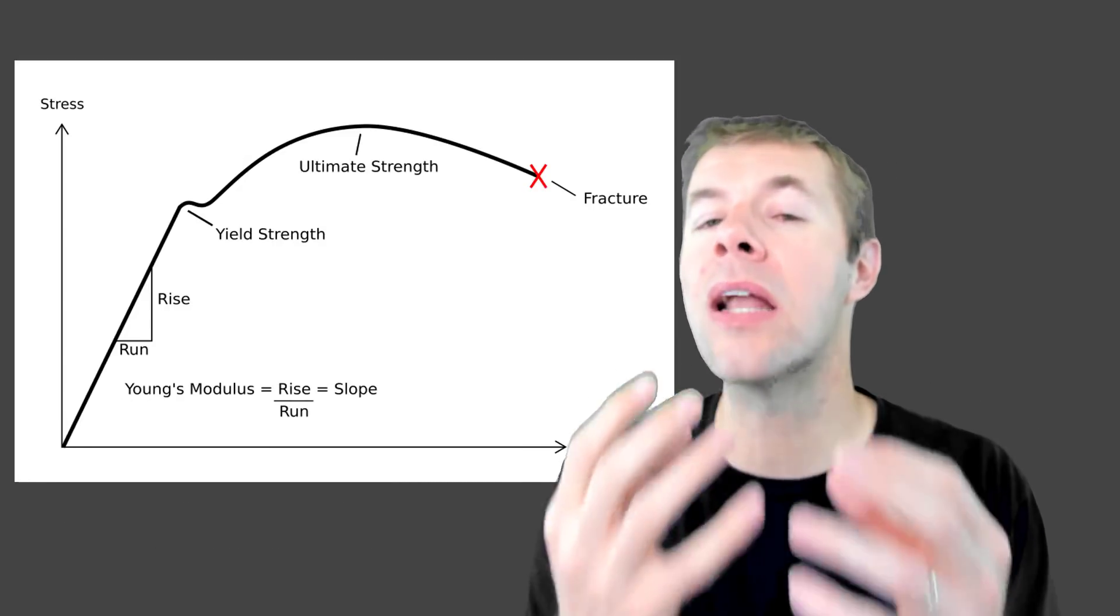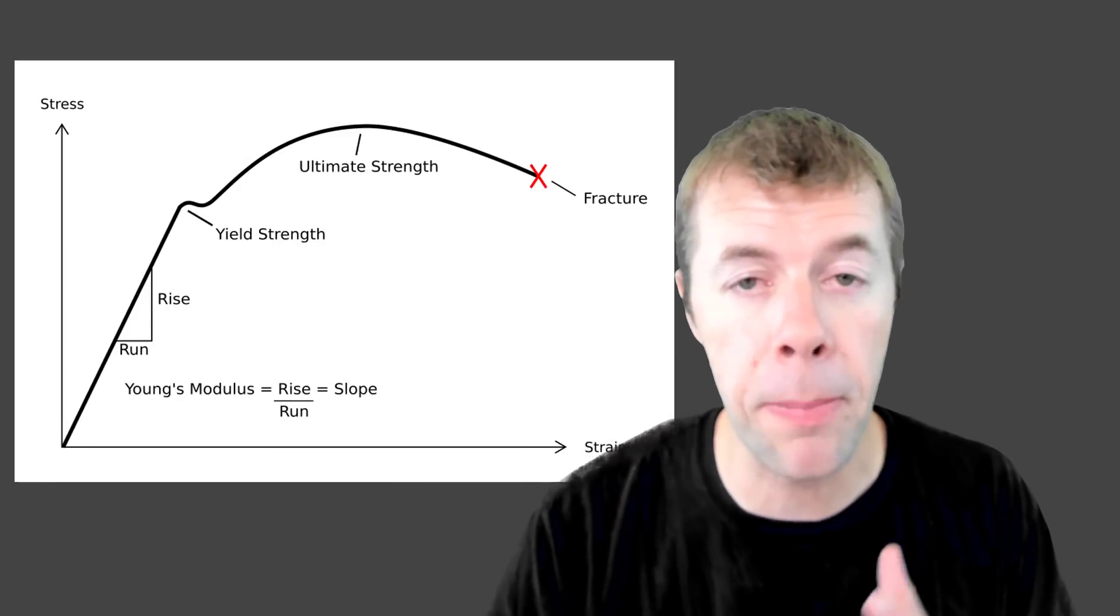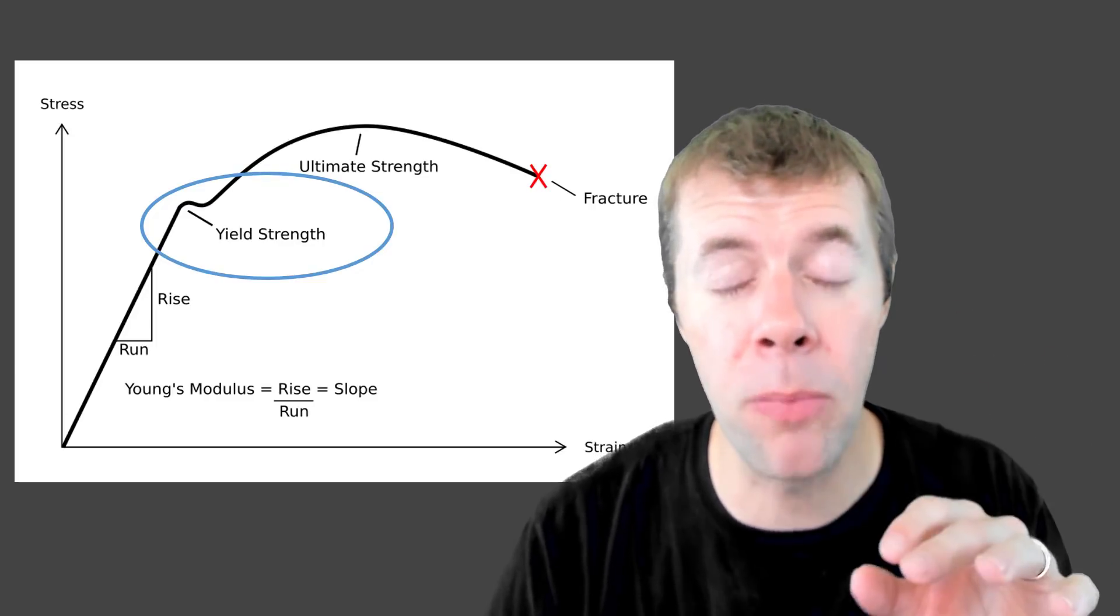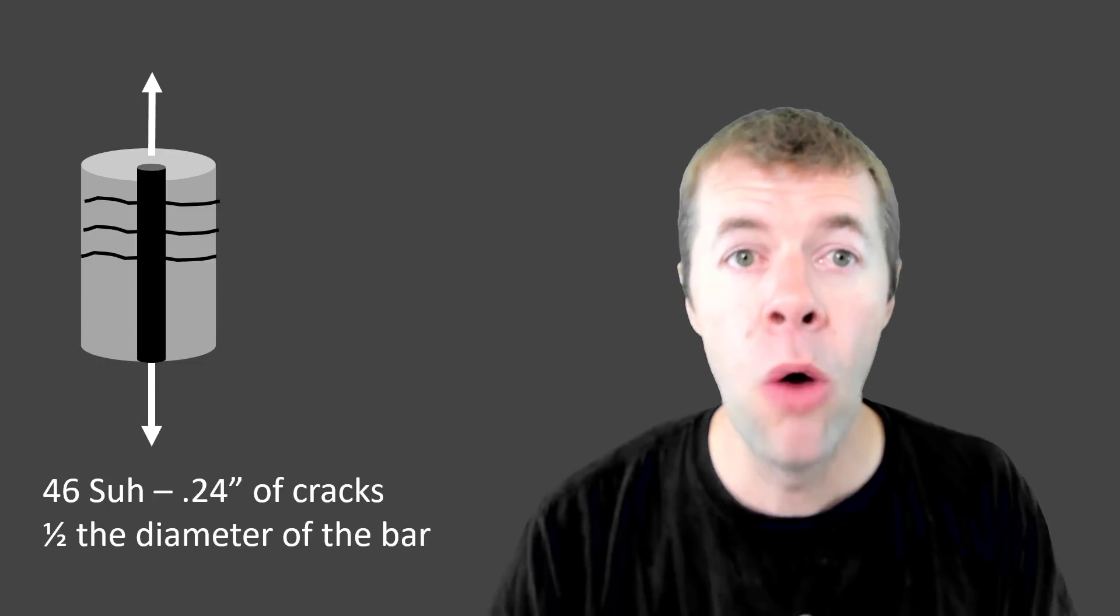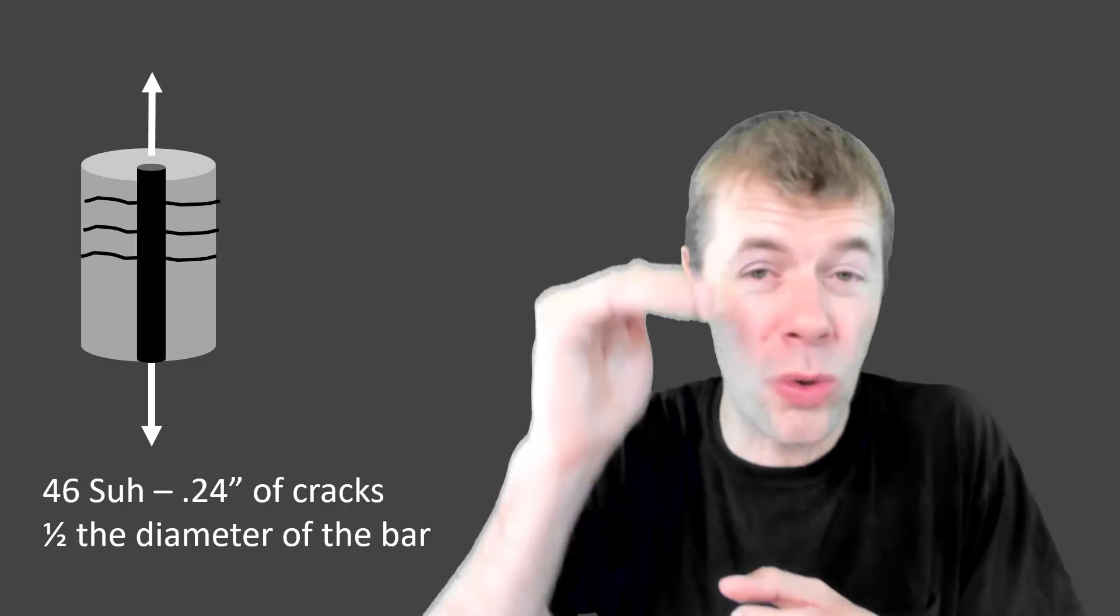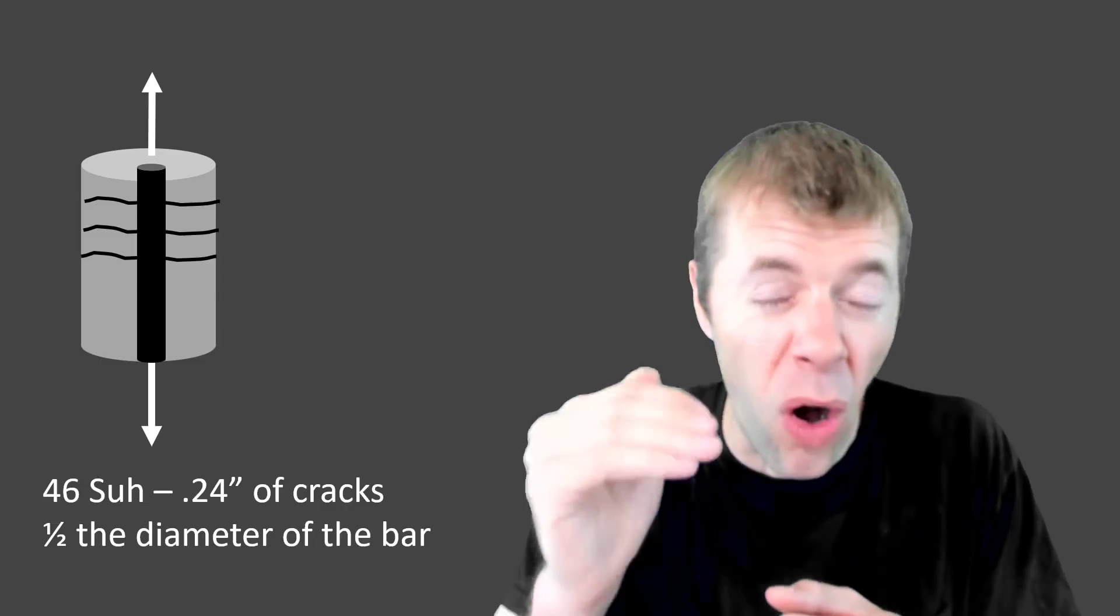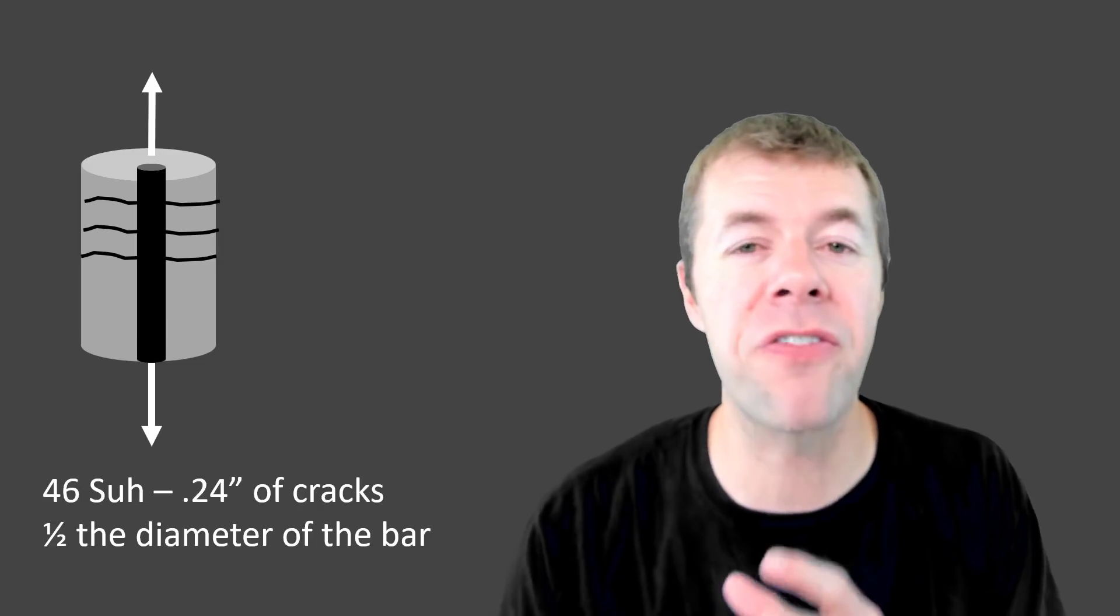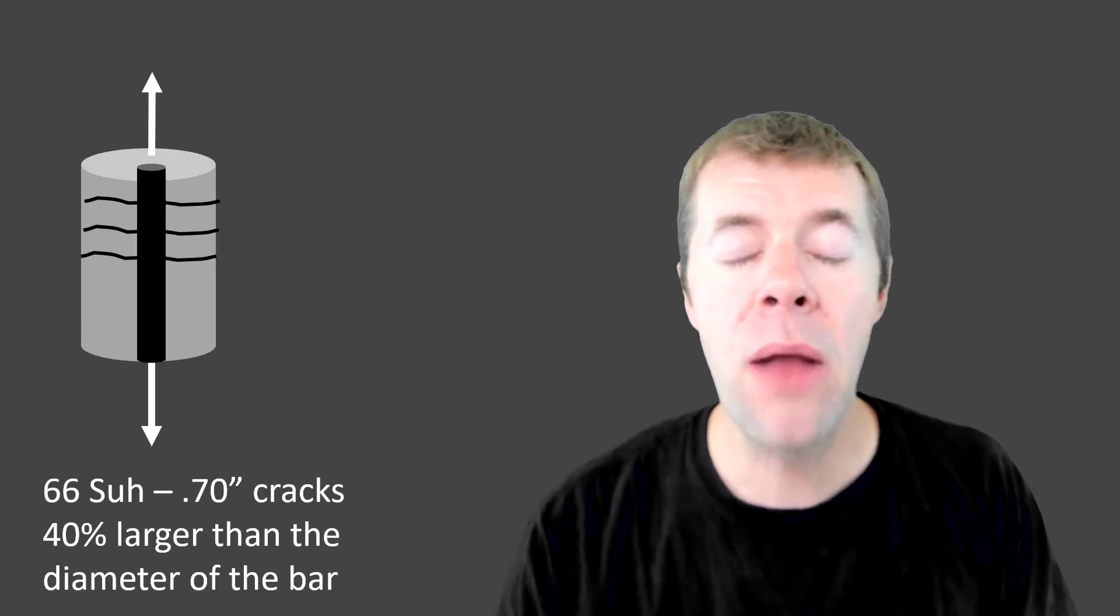Now, what happens when we start to add a little bit more Siouxs on top of this, we exceed the yield strength, and we're going to see a lot more movement, a lot faster. When we get up to 46 Siouxs, the crack's not in one place anymore. It's likely stretched out in multiple places, but if I added all those crack sizes up, it'd be about a quarter of an inch or about half the diameter of the rebar.